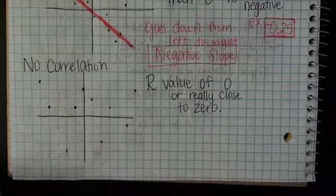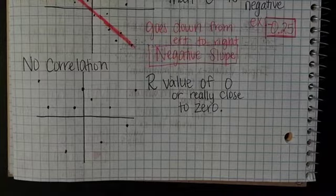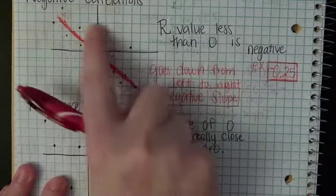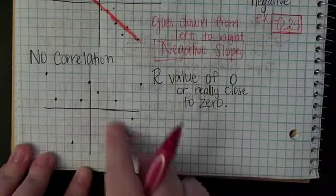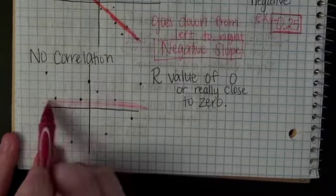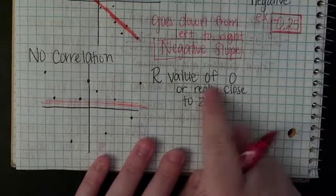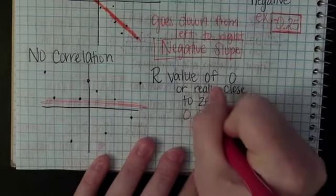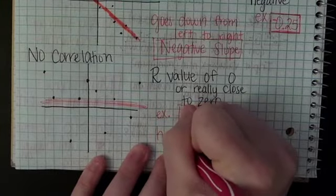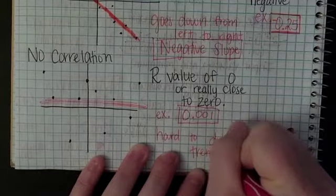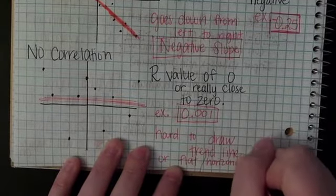No correlation. If you were trying to draw a trend line on this, how would you draw a trend line? There's a bunch of points down here, a bunch of points up here. Notice there was one that was pretty far off, that's called an outlier. But no correlation, it almost makes like a W and you can't draw a trend line that makes a W. An R value of zero or really close to zero, like 0.001, that would be no correlation.